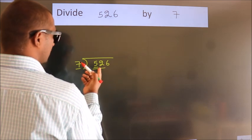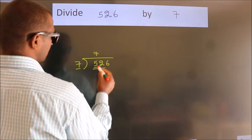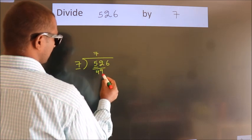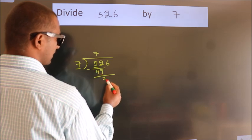A number close to 52 in 7 table is 7 sevens, 49. Now, we should subtract. We get 3.